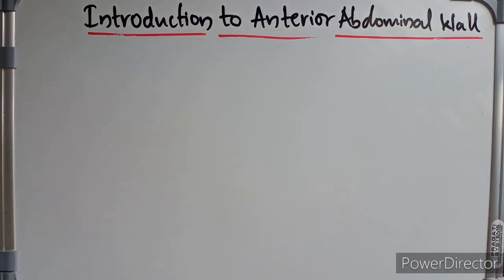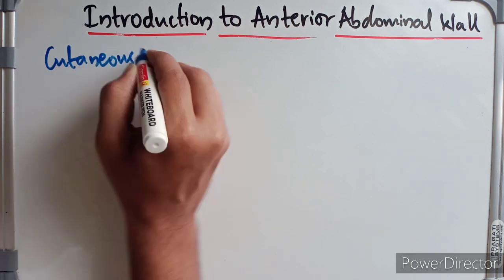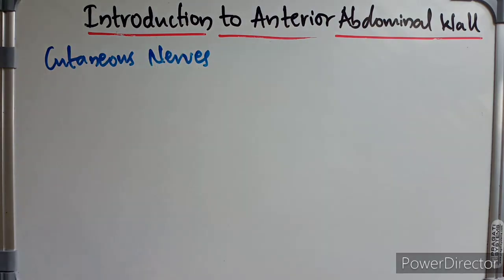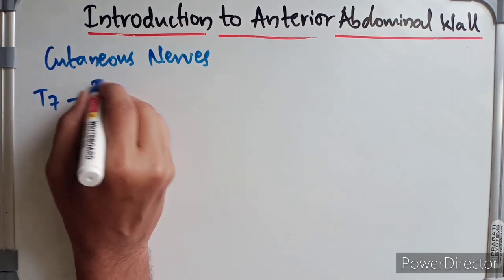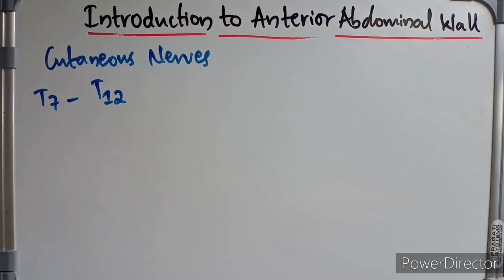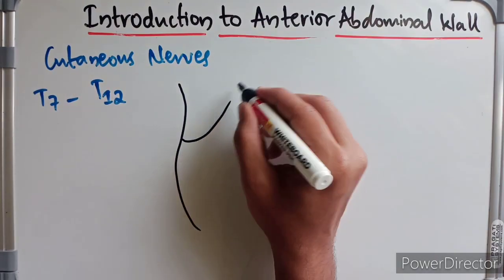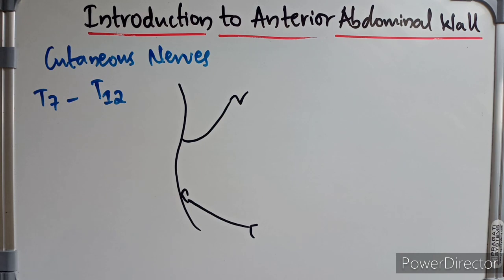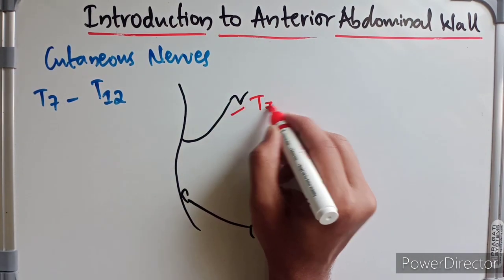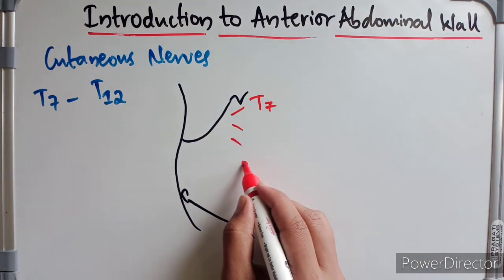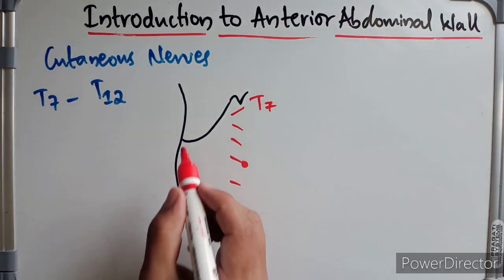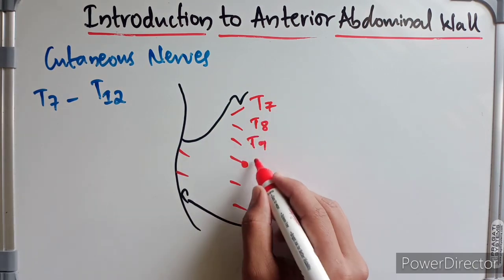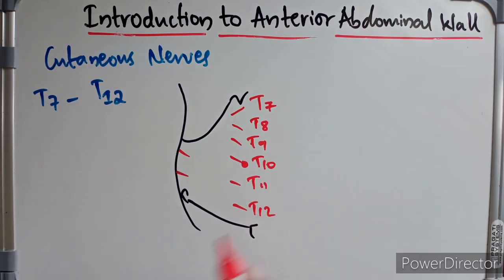The skin of the anterior abdominal wall is almost entirely supplied by the lower six thoracic nerves, from T7 to T12. T7 supplies near the xiphoid process, T8 and T9 supply the upper abdomen, T10 supplies near the umbilicus, and T11 and T12 supply the lower abdominal wall.